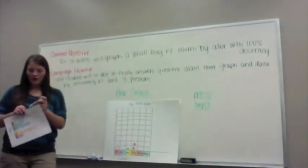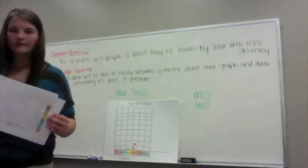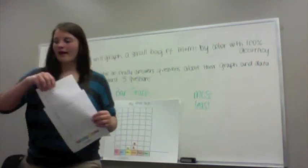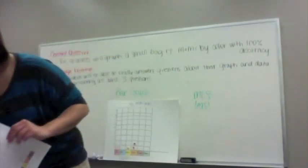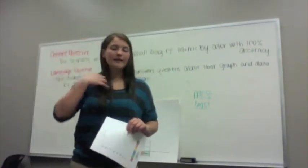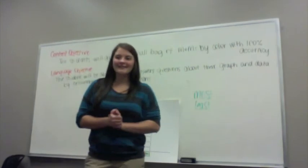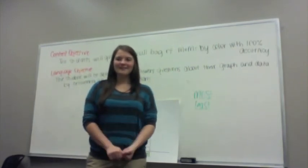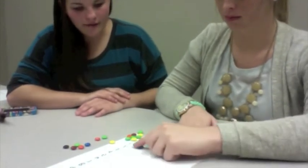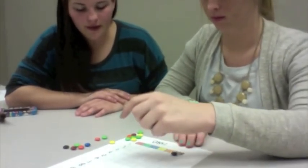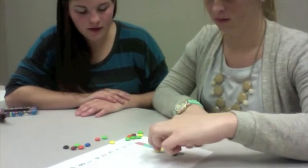So now you each will get a graph, a small bag of M&Ms, and some crayons. First you'll place the M&Ms on the graph. Please do not eat the M&Ms until the end of the lesson. Okay, so now let's start placing our M&Ms on our graph. Place each M&M in a square — good job. Start at the very bottom.